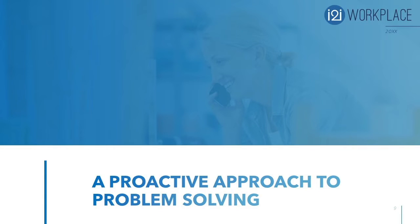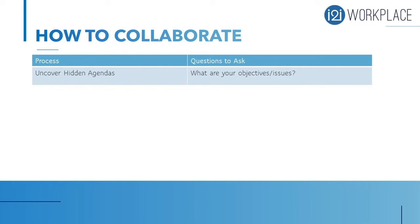How to collaborate? There are steps you should take and questions to ask along the way to ensure the other person is engaged in the conversation. First, uncover hidden agendas. You won't know where the person is coming from unless you ask them. People are often hesitant to offer their suggestions about how the problem should be resolved. Ask questions like: What are your objectives or issues? What are you hoping to achieve? This way you'll understand where the other party is coming from and can ensure your solution addresses those issues.